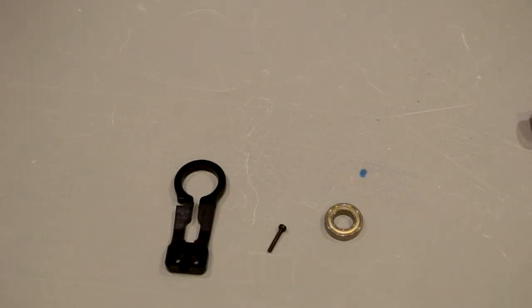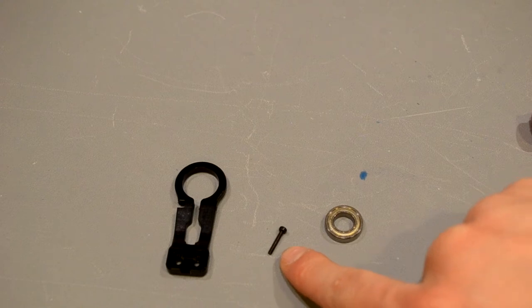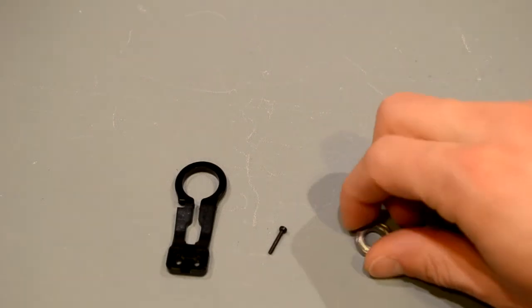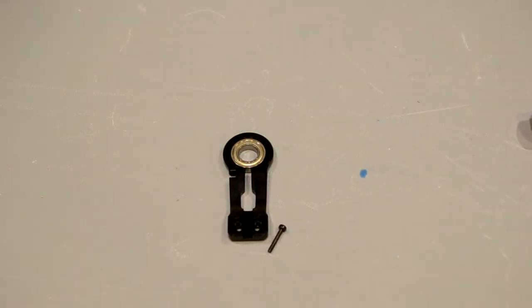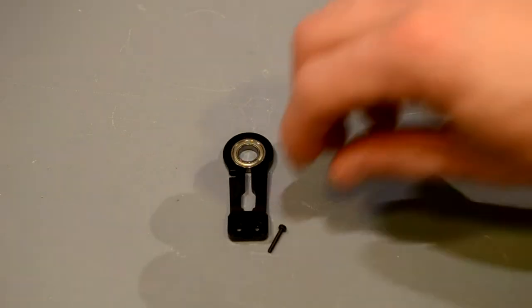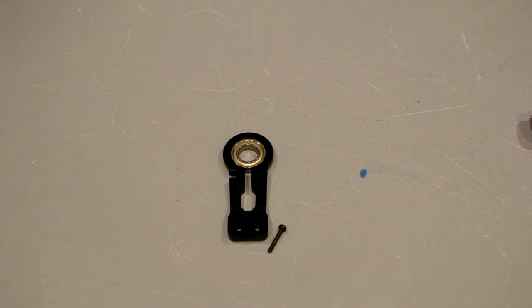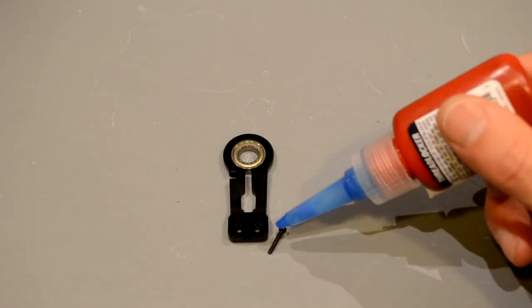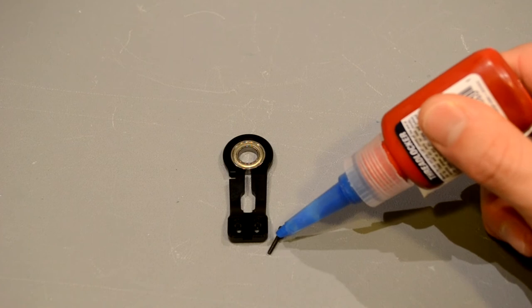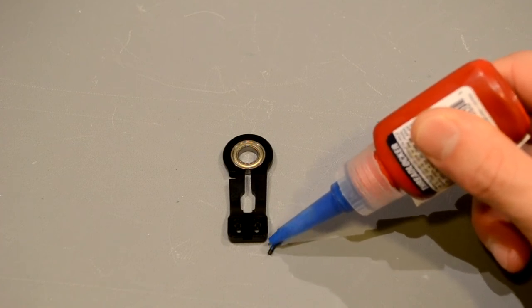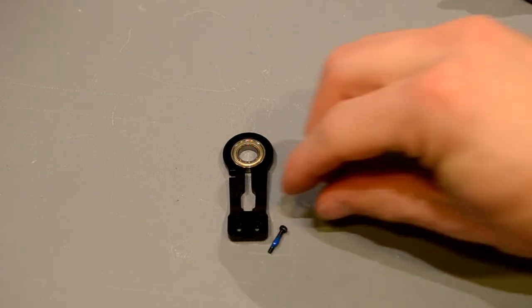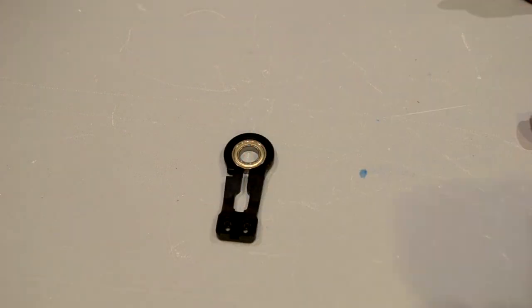Alright guys. So the next thing that we need to do is insert the bearing into the bearing race. Now, that is done with one 12mm by 2.5mm hex screw. So we'll just pop the bearing in there. And then all we have to do is compress the bearing race gently around the bearing.